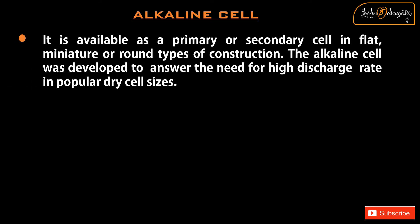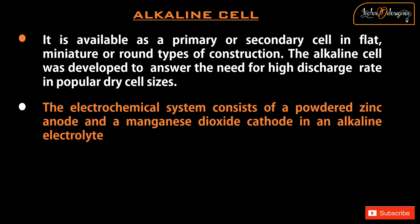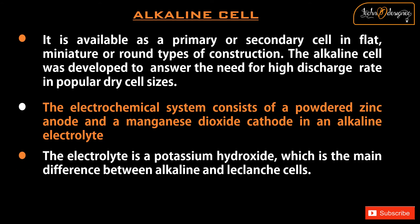Alkaline cell: It is available as a primary or secondary cell in flat, miniature, or round types of construction. The alkaline cell was developed to answer the need for high discharge rate in popular dry cell sizes. The electrochemical system consists of a powdered zinc anode and a manganese dioxide cathode in an alkaline electrolyte. The electrolyte is potassium hydroxide, which is the main difference between alkaline and Leclanche cells.